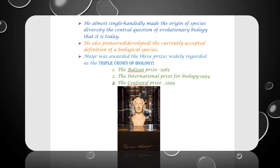He also pioneered, meaning developed, the currently accepted definition of a biological species. Mayr was awarded the three prizes widely regarded as the triple crown of biology: 1. The Balzan Prize in 1983, 2. The International Prize for Biology in 1994, and 3. The Crafoord Prize in 1999.